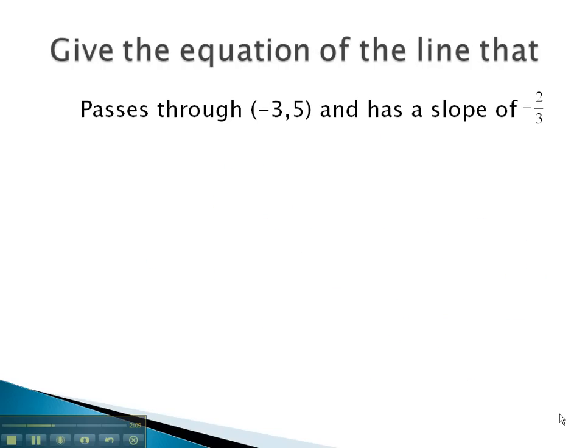For example, in this problem, we pass through a point. We will use that specific point. We also know it has a slope, which we always represent with the letter m. The point-slope formula, another good one to memorize, is y minus y1 equals m times x minus x1.